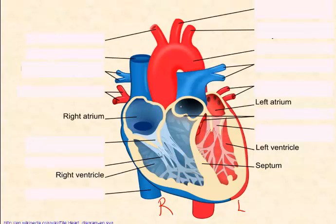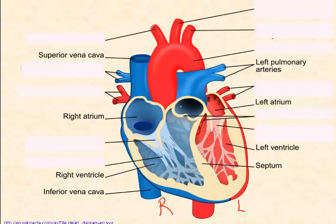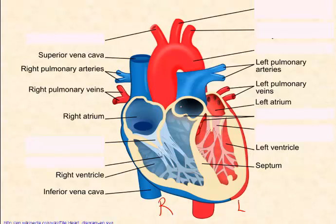This septum makes the heart in effect a double pump, as the right side deals only with deoxygenated blood, seen in blue here, and the left side deals only with oxygenated blood, shown in red. There should be no mixing of oxygenated and deoxygenated blood. Blood enters the right side of the heart from all parts of the body via the superior vena cava and the inferior vena cava. It leaves via the pulmonary arteries, goes straight to the lungs where it picks up oxygen, and then returns back to the heart via the pulmonary veins — shown in red now because the blood they carry is oxygenated.